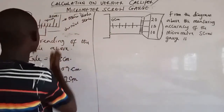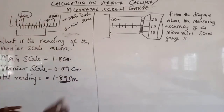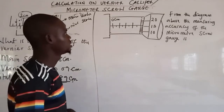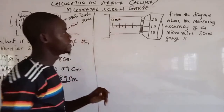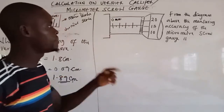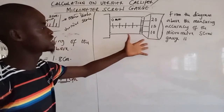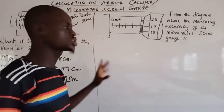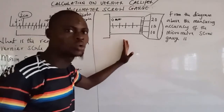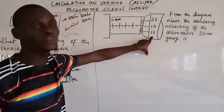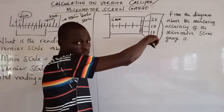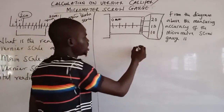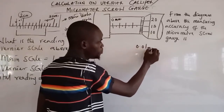Now let's look at the micrometer screw gauge. The same way you calculated the vernier caliper reading is how we calculate a micrometer screw gauge. Note that this instrument is measured in mm, not cm. The measuring accuracy of the micrometer screw gauge's vernier scale is 0.01 mm.